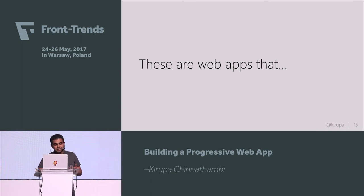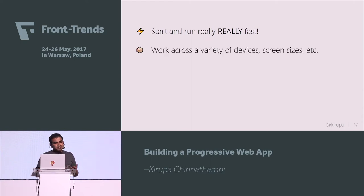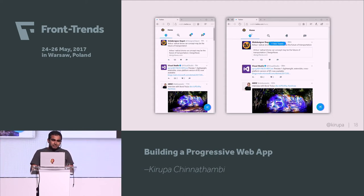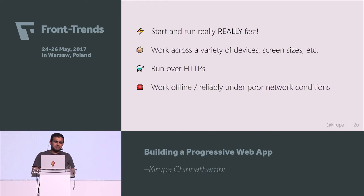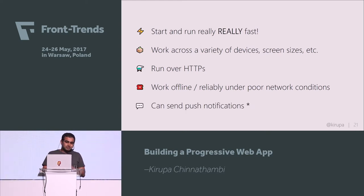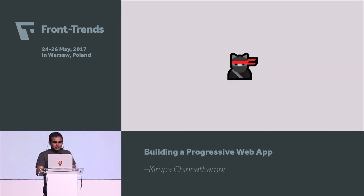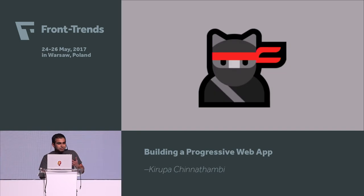To dive deeper into what progressive web apps actually are: they start and run really fast — they're performant. They are responsive and work across a variety of devices and screen sizes. They run over HTTPS, so they're secure. They tend to be great in situations where your network connectivity is spotty, so they work offline reliably. And they can also send push notifications — even when your browser is closed, notifications will still come in, just like text messaging. There's no magical API that gives you all these capabilities; it's a buffet of features that bring all of this to life.